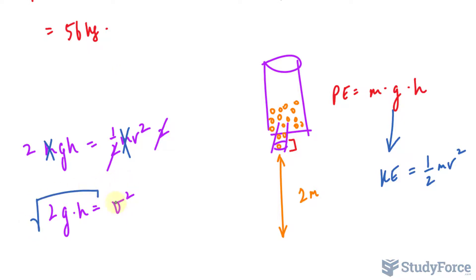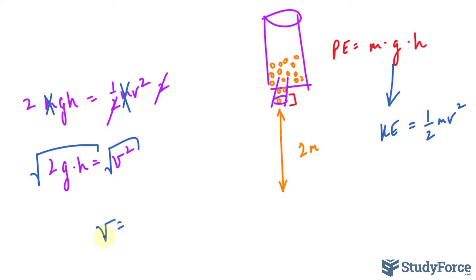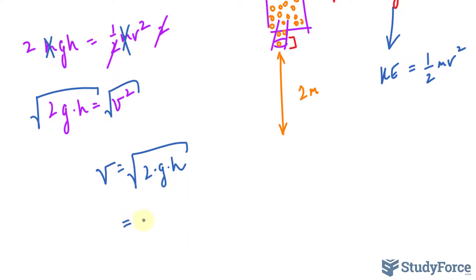And if we solve for v, we can multiply both sides by 2, which will cancel out this fraction here. So we have 2 times g times h is equal to v to the power of 2. We square root both sides and by doing that, we now have an equation that allows us to calculate the velocity.